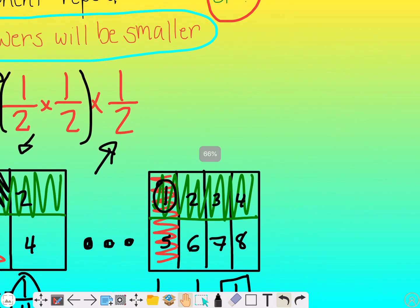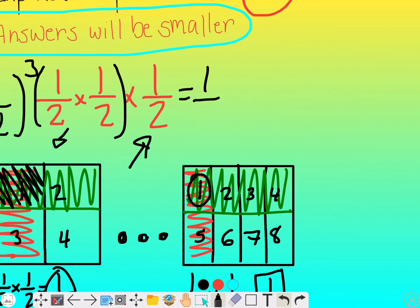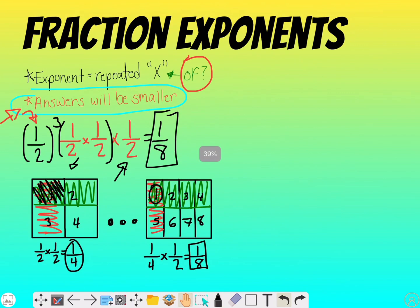So if I was to do one half times one half times one half, I get the final answer of one over eight, which is smaller than what we start with. So that is why it works.